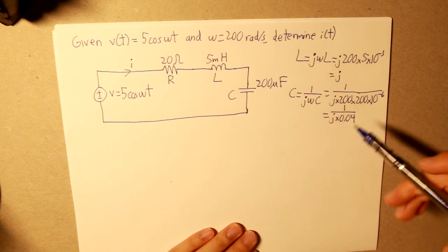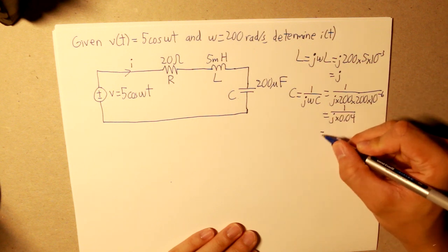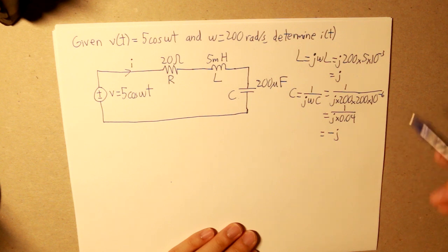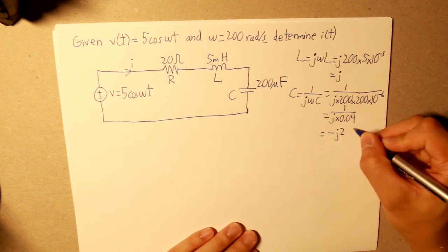And our answer will be 0.04 for the denominator. And now let's put that into the numerator, so since our j is in the denominator, we know by complex identity that would be equal to negative j. And if we take 1 divided by 0.04, what we get is 25.